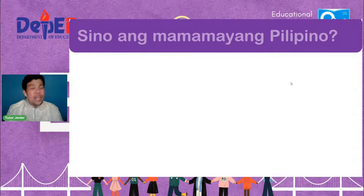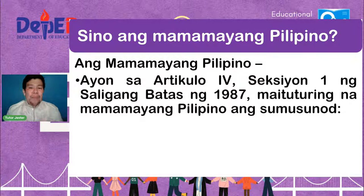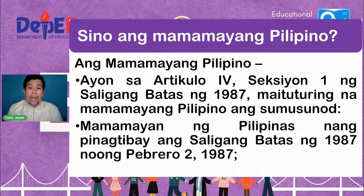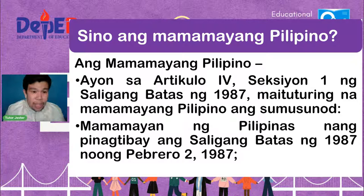Sino nga ba ang masasabi nating mamamayang Pilipino? Ang mamamayang Pilipino ayon sa Artikulo 4, Section 1 ng Saligang Batas ng 1987, maituturing na mamamayang Pilipino ang sumusunod. Una, mamamayan ng Pilipinas dahil sa pinagtibay ng Saligang Batas ng 1987, noong Pebrero 2, 1987. Halimbawa, ang kasagutan ni Fiona — yung pinsang ko po half-Chinese — siguro kasama ni Fiona dito sa Pilipinas.